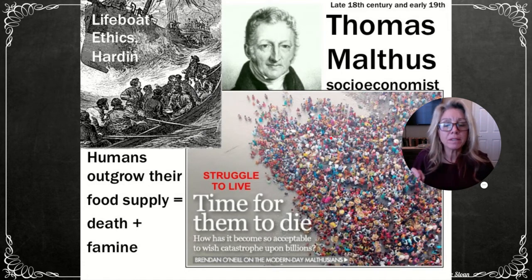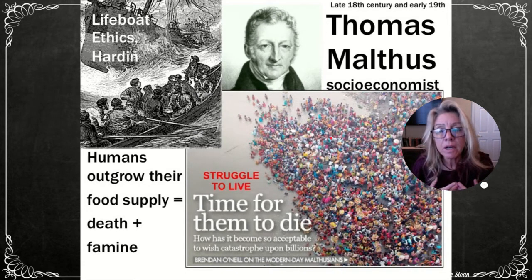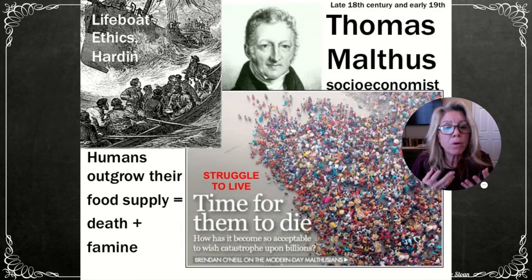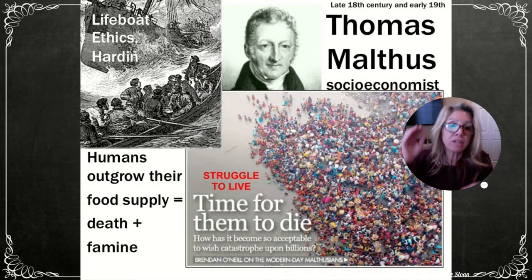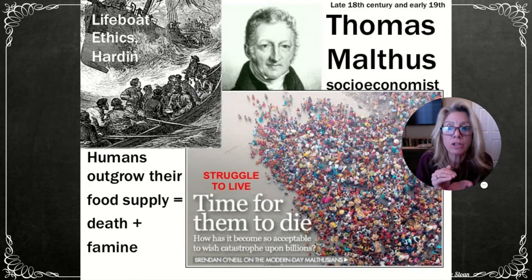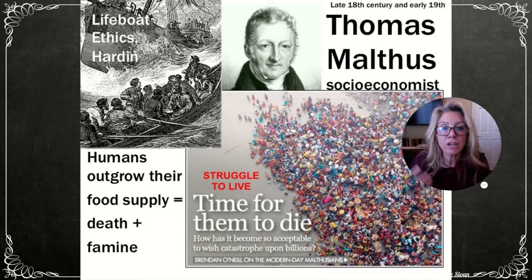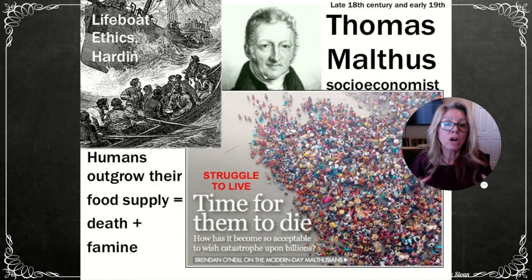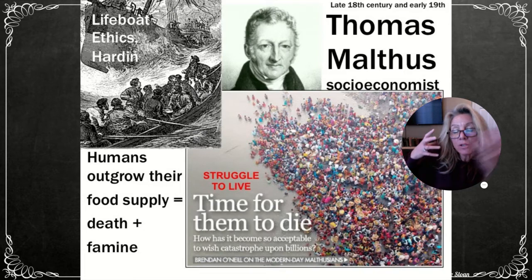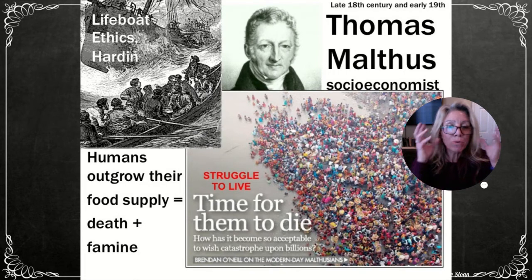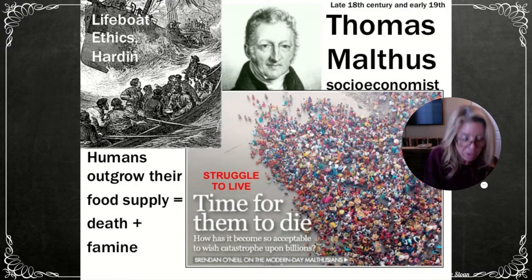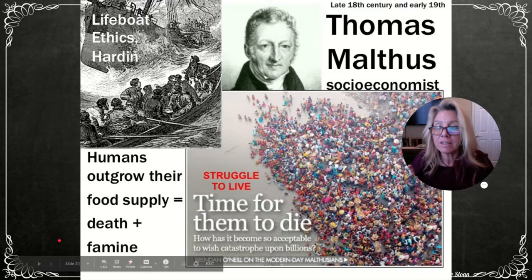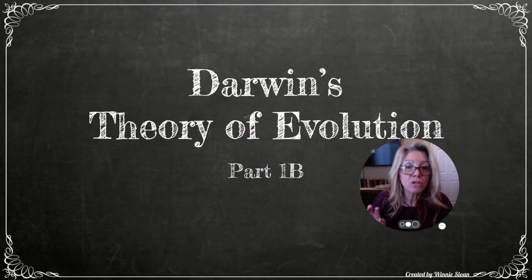Thomas Malthus was a socioeconomist who proposed that people would outgrow their resources, causing population crashes through death and famine. This sounds like the struggle for existence. Darwin used these ideas while traveling, reading these books and putting it all together to build his theory on the mechanism for evolution.